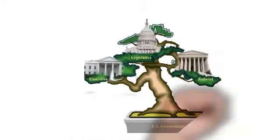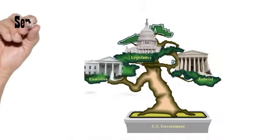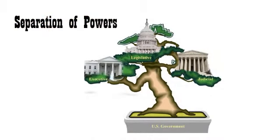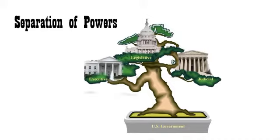Separation of powers was established to avoid having too much power fall into the hands of a single group. Our government is divided into three branches, as outlined in Articles 1, 2, and 3 of the U.S. Constitution.